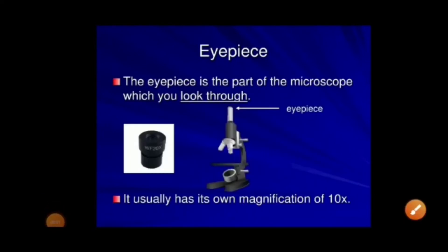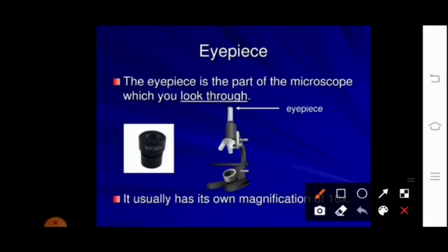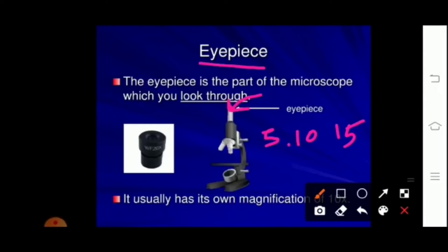Now moving toward the optical parts of the microscope. The first part is the eyepiece. It is called the eyepiece because when you look through it, your eyes come directly into contact with its first lens. It is also called the ocular. It usually has its own magnification of 5x, 10x, or 15x — meaning it magnifies the size of the object up to 5, 10, or 15 times. We can use the eyepiece as per requirement.